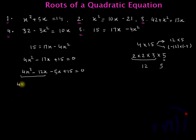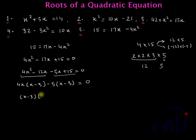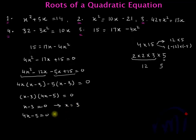So this becomes 4x squared minus 12x minus 5x plus 15 equals 0. From the first two terms, taking 4x common gives x minus 3, and taking minus 5 common from the last two terms also gives x minus 3. Taking x minus 3 common leaves 4x minus 5, so x minus 3 multiplied by 4x minus 5 equals 0. Either x equals 3 or x equals 5 by 4. This is one method, and after this we will learn two more methods of finding the roots of a quadratic equation. Keep watching MathSmart, bye-bye.